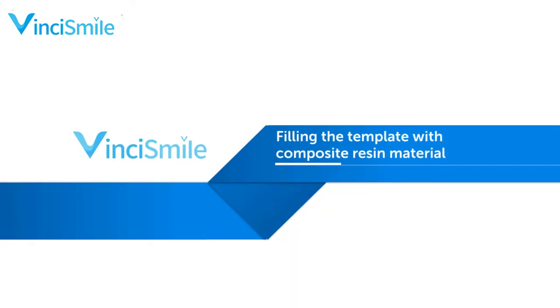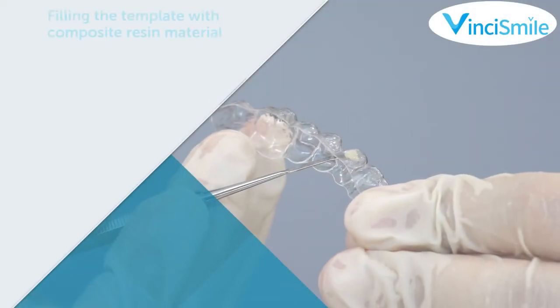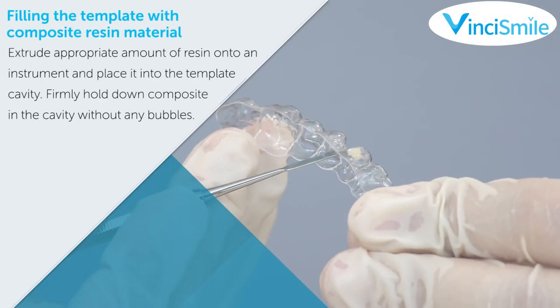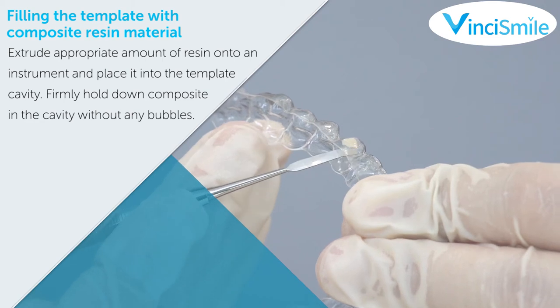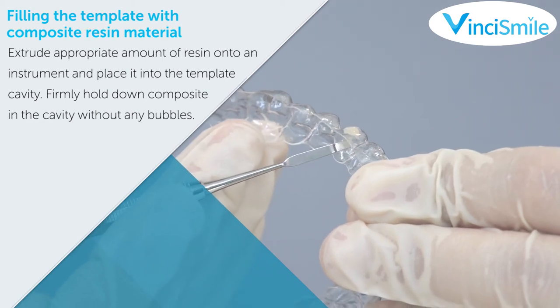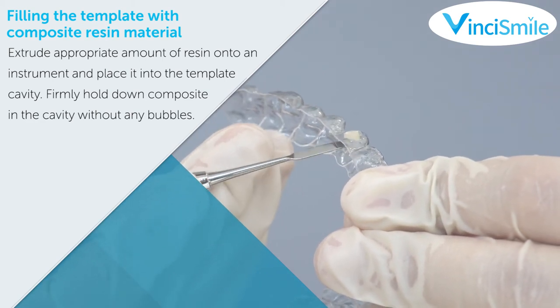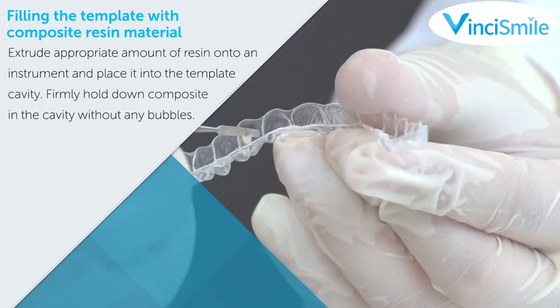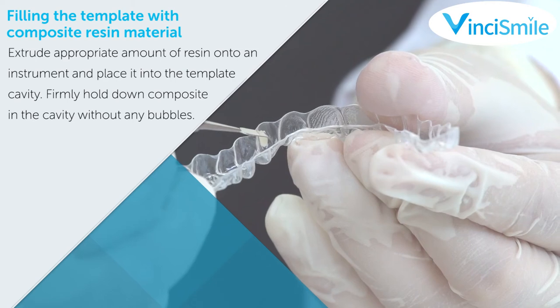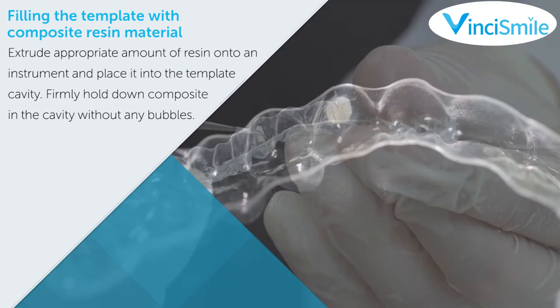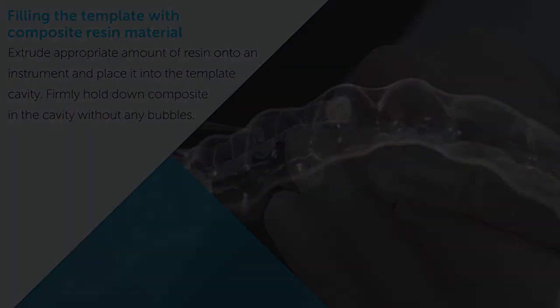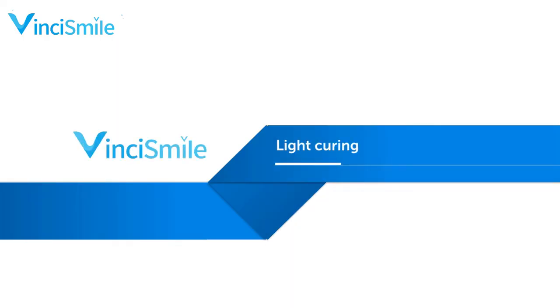Fill in the template with composite resin material: extrude an appropriate amount of resin onto an instrument and place it into the template cavity. Firmly press the composite into the cavity without any bubbles.